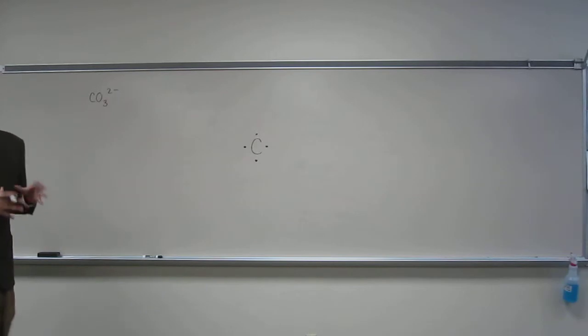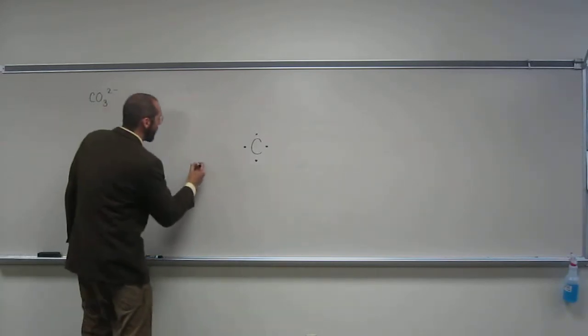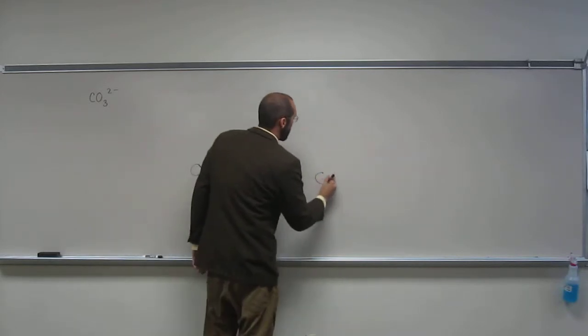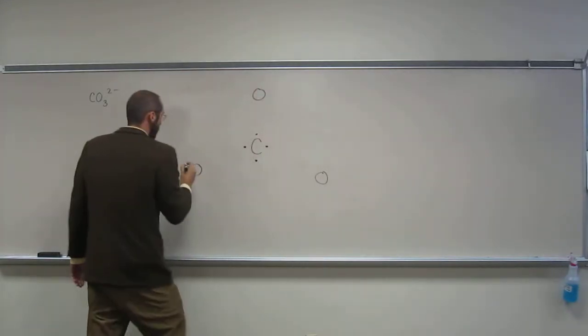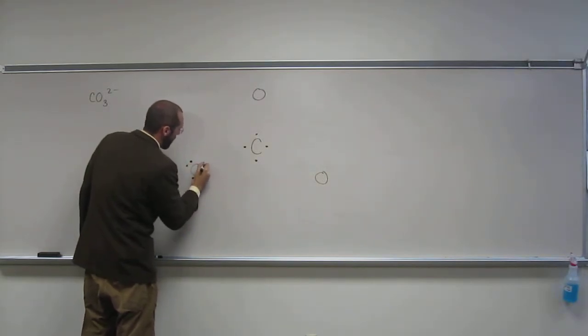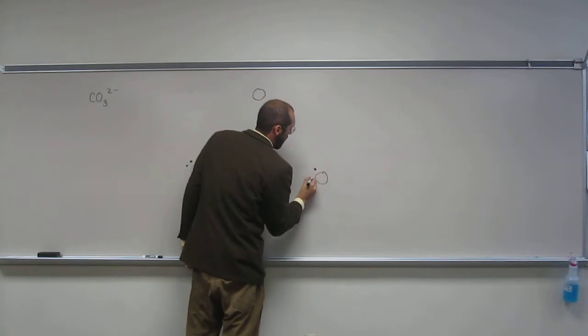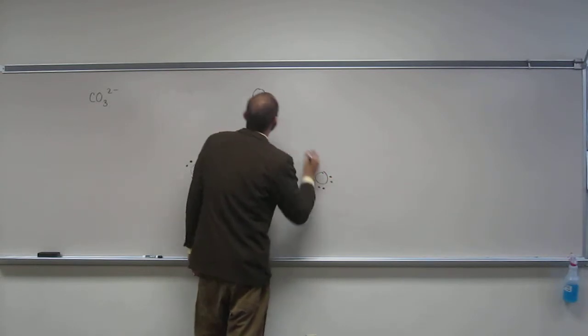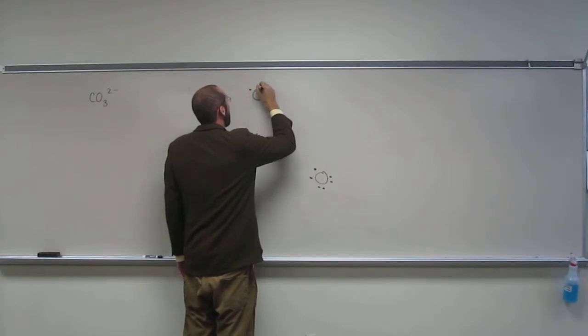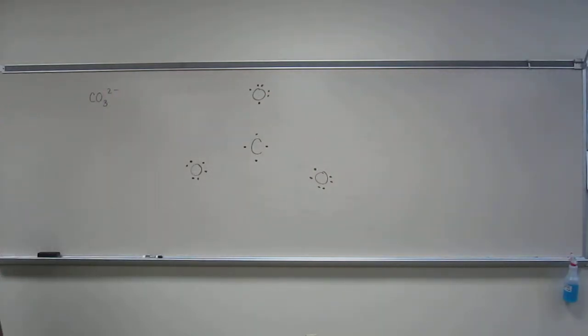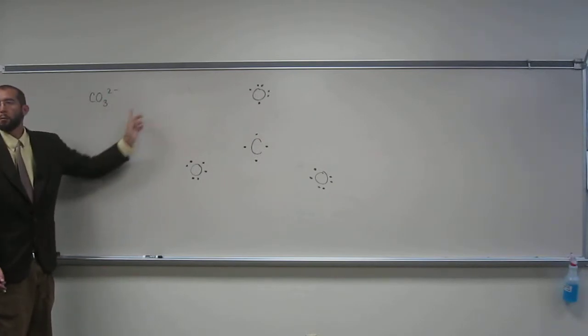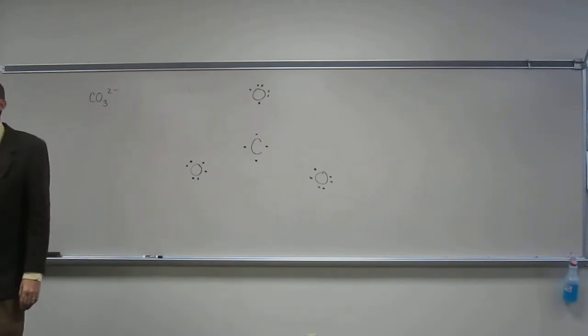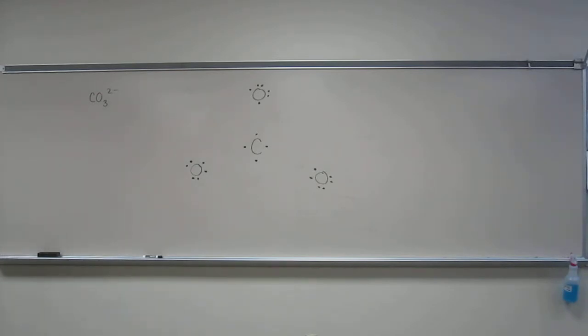Then there's probably 3 oxygens around that central carbon. So let's draw those 3 oxygens, and we'll draw their Lewis structures. Notice there's 2 minuses on this molecule or this ion, right? So we've got to add 2 more electrons to our Lewis structure.